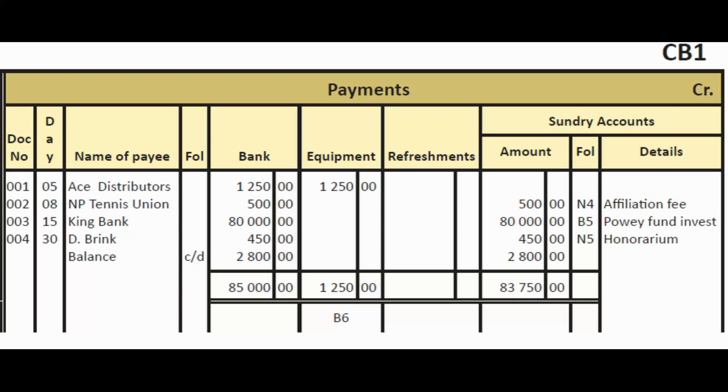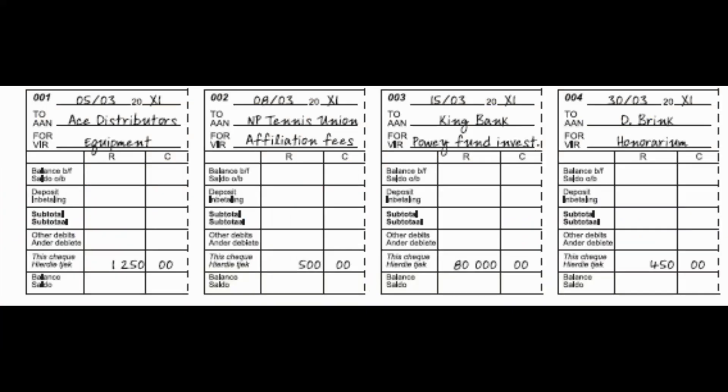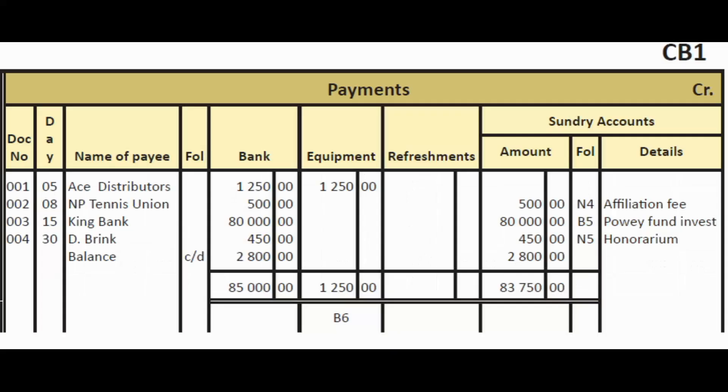The second payment was to NP Tennis Union for affiliation fees — $500. We credit bank and debit affiliation fees. Under payments, write NP Tennis Union, $500 in the bank column, and $500 in the sundry accounts column with the account name 'Affiliation Fees' in the details.